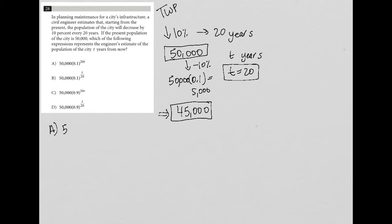we just test out, is it true that 50,000 times 0.1 to the 20, times 20, is that equal to 45,000? And what you will find when you put this in your calculator is that it's not true. That does not work.